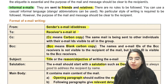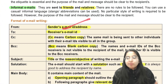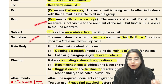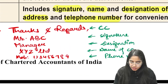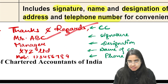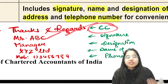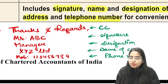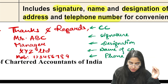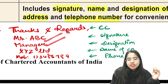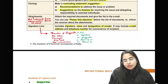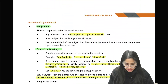So to summarize the format: From, To, CC/BCC, Subject, Salutation, Body. After the body, write 'Thanks and regards', or 'Yours sincerely', 'Yours faithfully', or 'Thanking you'. Then write your name, designation, name of the company, and phone number. That's all about the format of email writing.